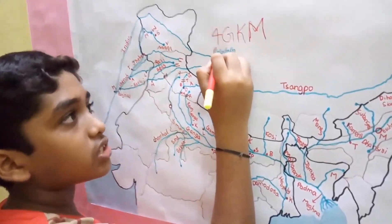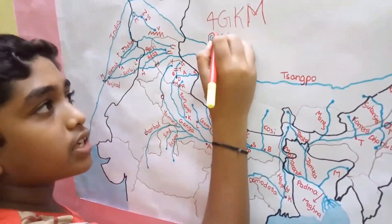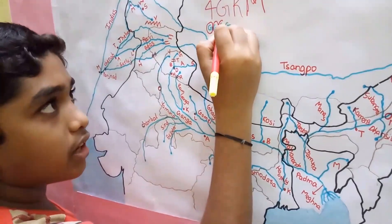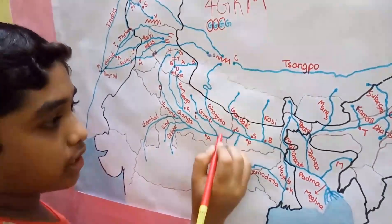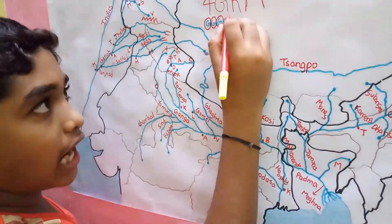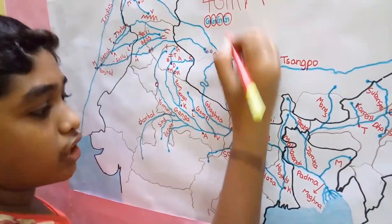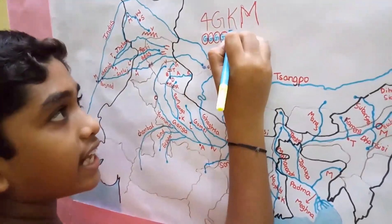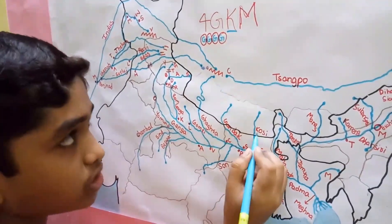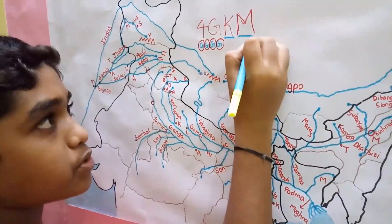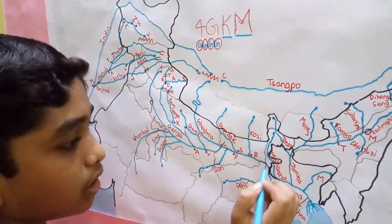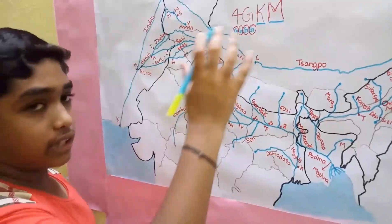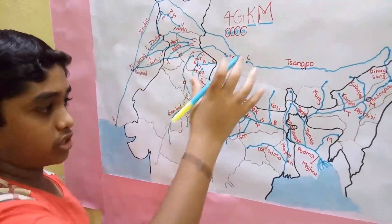So this first G is Ram Ganga. The second G stands for Gomti. The third G stands for Ghagra, and the fourth G stands for Gandak. Then K stands for Kosi and M stands for Mahananda. This is the mnemonic for the left bank tributaries.